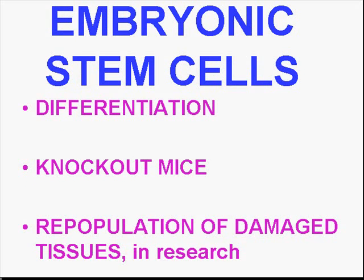Stem cells are so necessary in studying differentiation of cells, because stem cells are the ultimate undifferentiated cell. As they differentiate through various generations and mitoses, perhaps under the influence of cytokines and growth factors, they become more differentiated — losing some capability but gaining specialization, just like specializing from general medicine to pathology. In research, we can knock out genes in stem cells and then see what diseases these mice will have, which has been a tremendous help in how we learn about diseases.